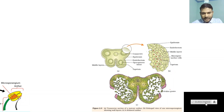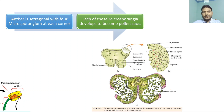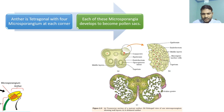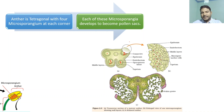This particular picture is from the textbook. The anther is tetragonal with four microsporangia at each corner. Tetragonal means you are having four different sides. So you are having four different microsporangia at four different corners. That's why the anther is tetragonal with four different microsporangia. Each of these microsporangia will develop to become a pollen sac, so pollen grains are going to develop inside these microsporangia.